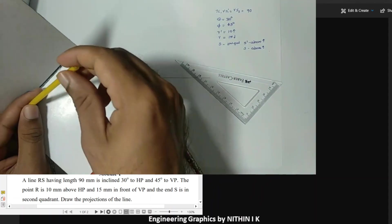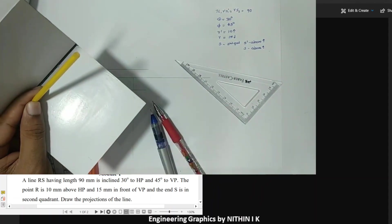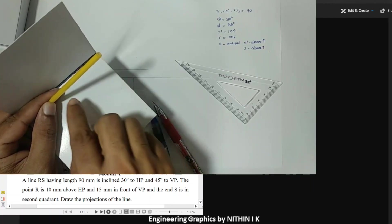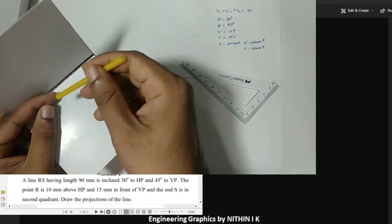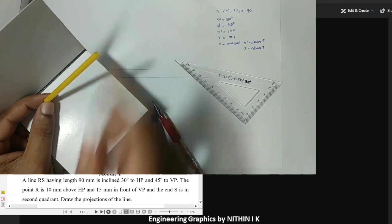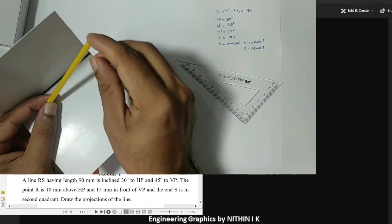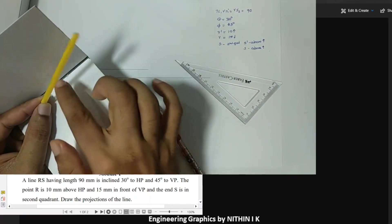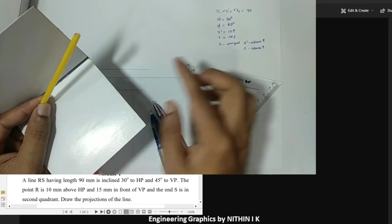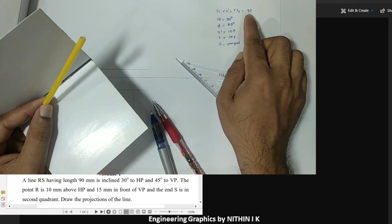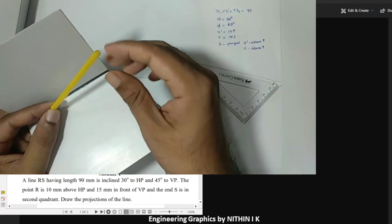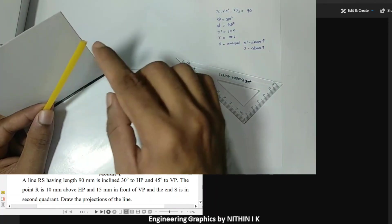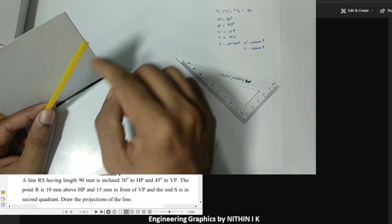The line is inclined 30 degrees to HP and 45 degrees to VP. We will use the rotating line method because when the line is parallel to VP and inclined to HP in the first condition, we use true length and true inclination.